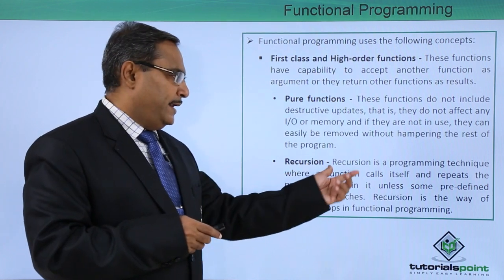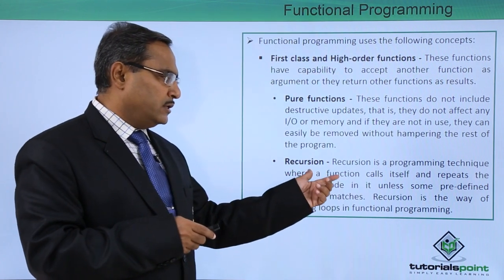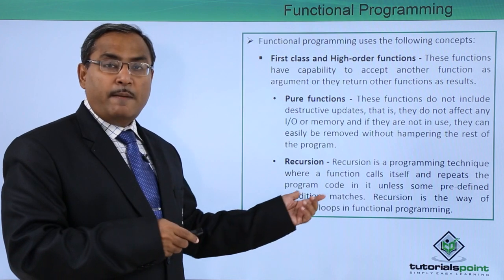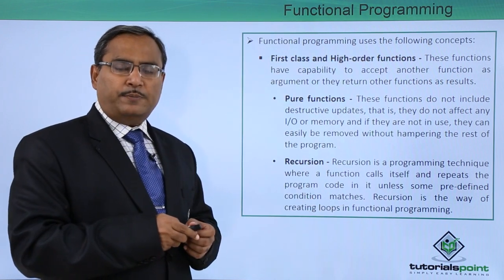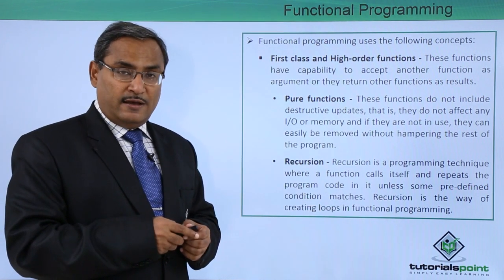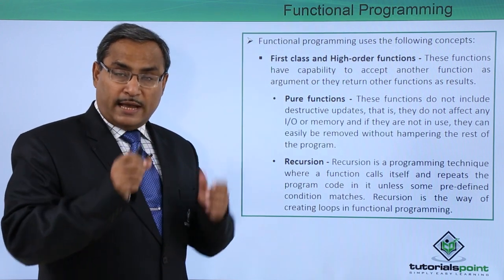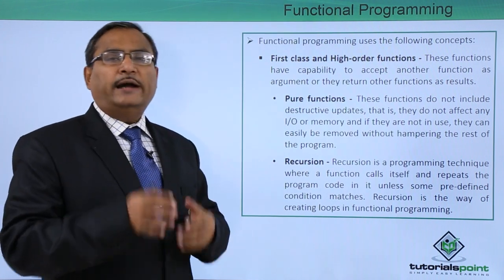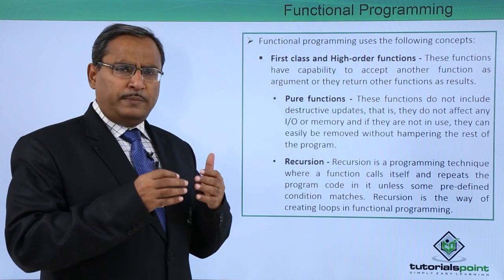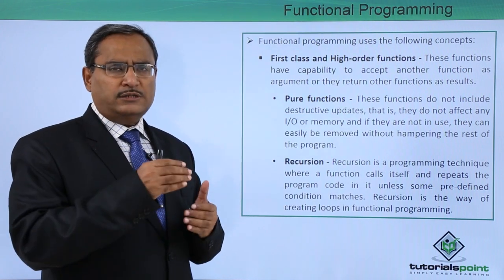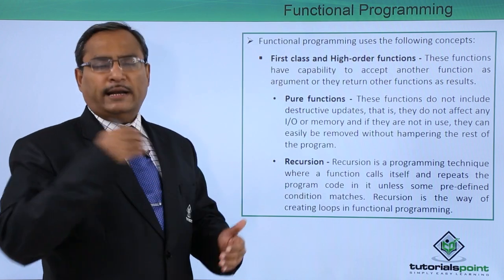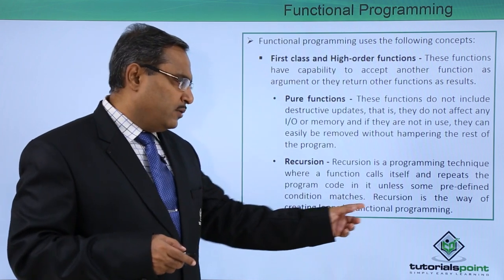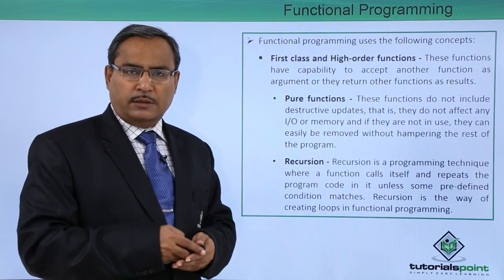Next is recursion. Recursion is a programming technique where a function calls itself, repeating the program code within it, unless some predefined condition matches. In a recursive algorithm, there is a base case where outputs are known and where the recursion terminates. The algorithm has the capability to call itself either directly or indirectly. Direct calling means the recursive call is within the function body itself; indirect calling means it calls another function which in turn calls the parent. Recursion is the way of creating loops in functional programming.